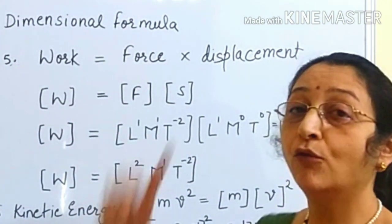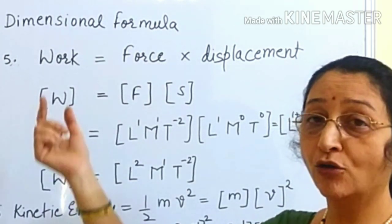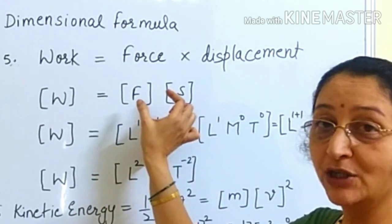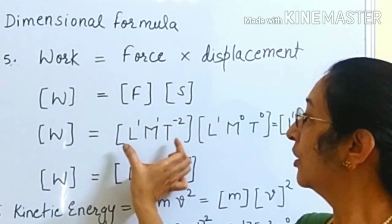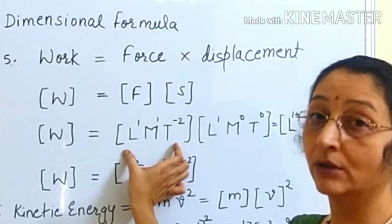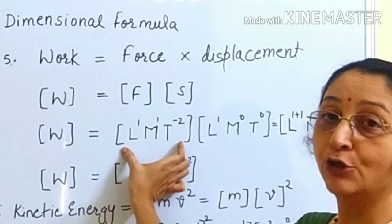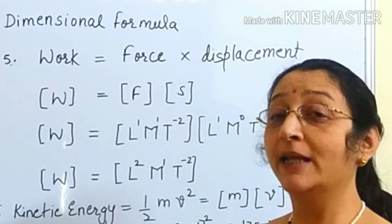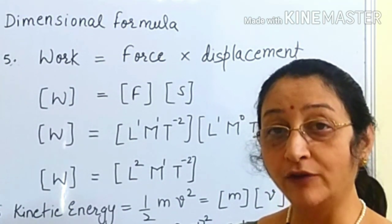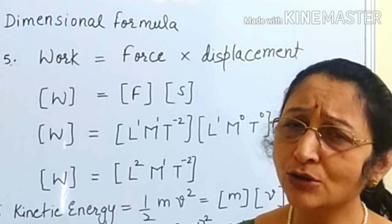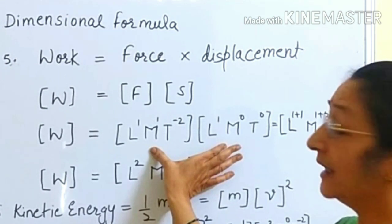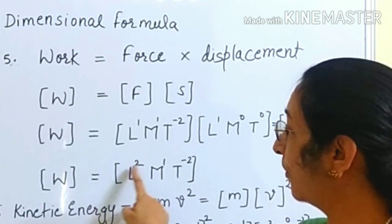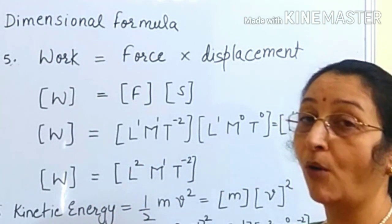This is work. We know work equals force into displacement. So in box bracket we write W equal to the dimension for force and the dimension for displacement. The dimension for force is L to the power 1, M to the power 1, T to the power minus 2. For displacement, the unit is meter, so we have L to the power 1, M to the power 0, T to the power 0. Adding these two, we get the dimension for work as L to the power 2, M to the power 1, and T to the power minus 2.